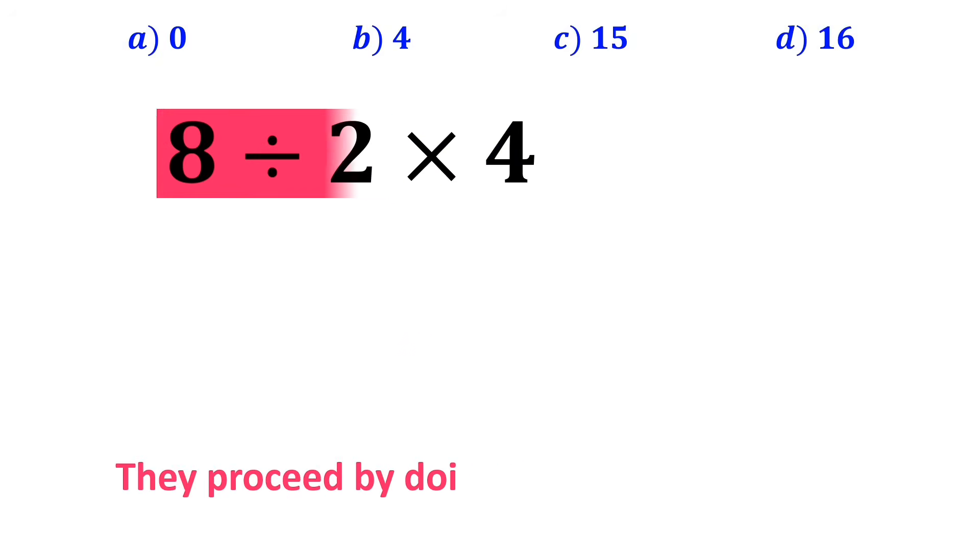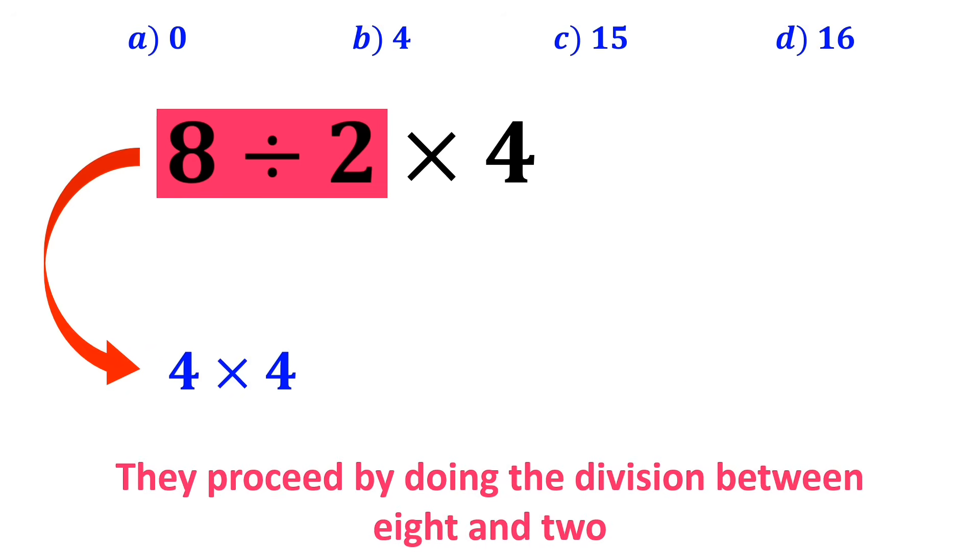Then they proceed by doing the division between 8 and 2, which gives them 4 times 4. And finally, they multiply the two 4s, which ends up with the answer 16.